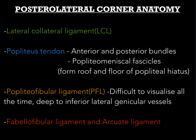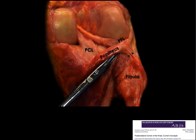Coming to the popliteus tendon — anterior and posterior bundles are present, and popliteomeniscal fascicles are also included within the popliteus tendon. The popliteofibular ligament is most of the time difficult to visualize because we need to acquire it in an oblique plane with thin-cut sequences so that it is better visualized. It is a very thin ligament arising from the popliteal tendon to the fibula, similar to the fabelofibular ligament — both are very thin structures and difficult to visualize consistently.